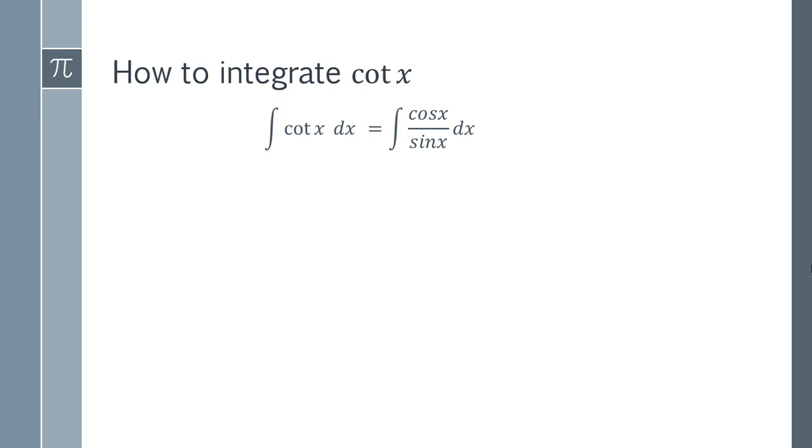So remember that cotangent is 1 over tangent. So if we flip the definition of tangent, which is sine over cosine, flip that upside down, you get cos over sine.